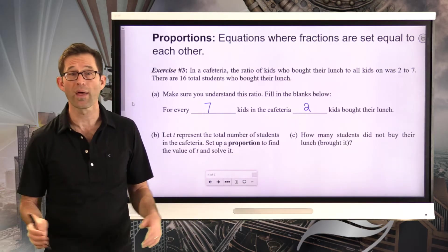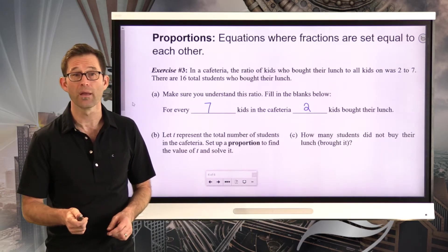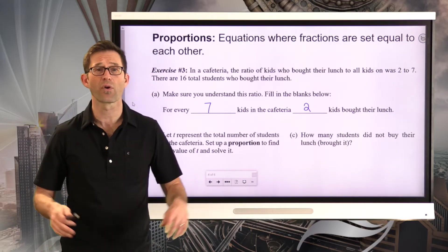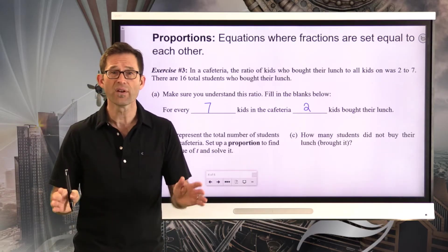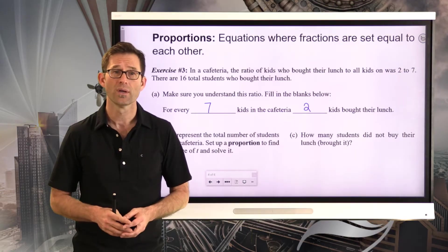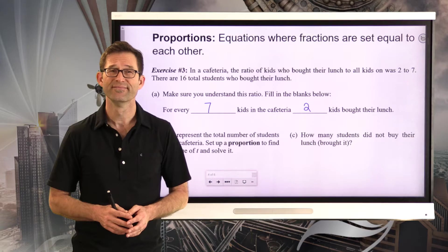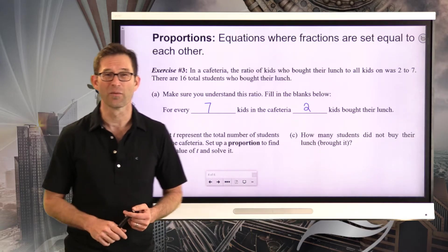The ratio of the kids who bought their lunch to all kids was 2 to 7. For every blank kids in the cafeteria, blank kids bought their lunch. So what this ratio tells us is that for every 7 kids in the cafeteria, 2 of them bought their lunch.